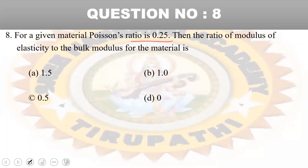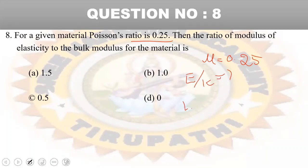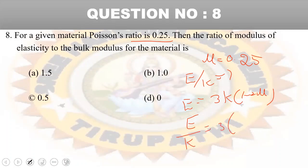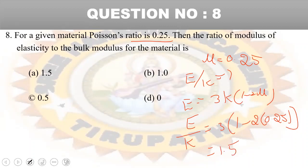Next question: for a material with Poisson's ratio 0.25, find the ratio of modulus of elasticity E to bulk modulus K. Using E equals 3K into (1 minus 2mu), substituting mu equals 0.25 gives E by K equals 3 into (1 minus 0.5) equals 3 into 0.5 equals 1.5. Option A is the right answer.